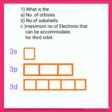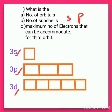First of all, the third shell has three subshells which are 3s, 3p, and 3d. So, the possible subshells in the third shell are s, p, and d. That means 3s, 3p, and 3d are the three subshells in the third orbit, where the principal quantum number n is equal to 3.